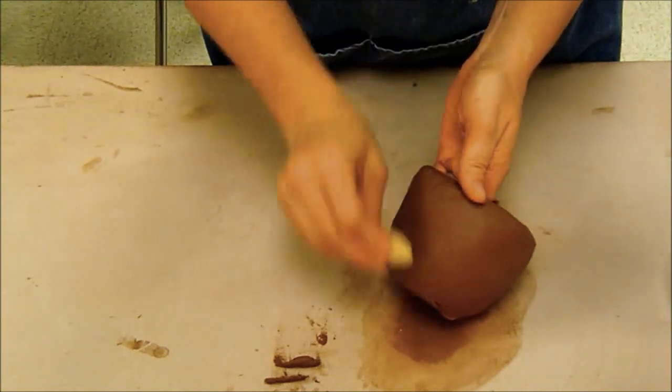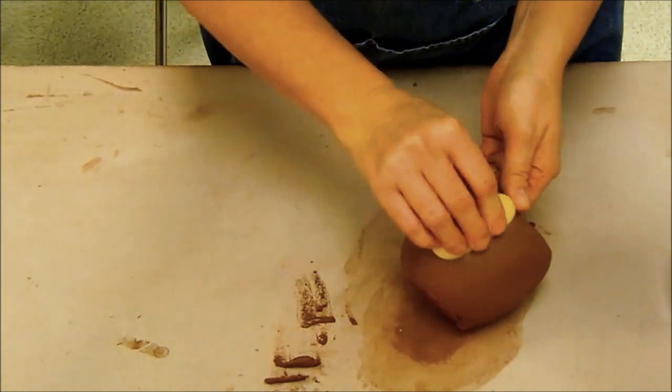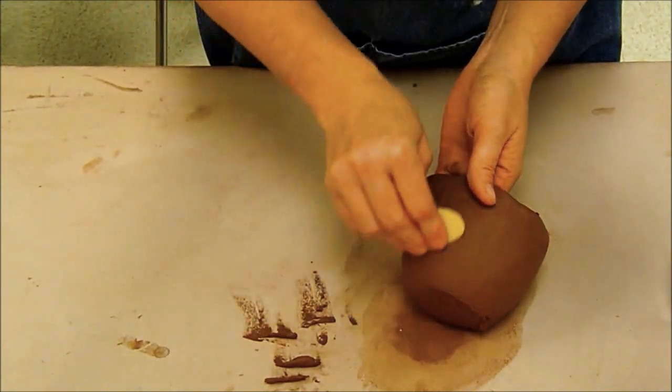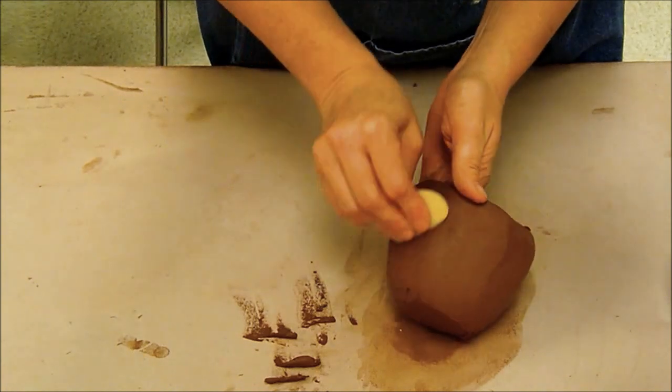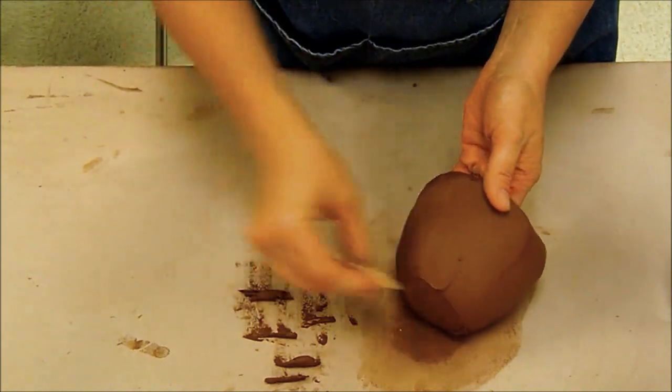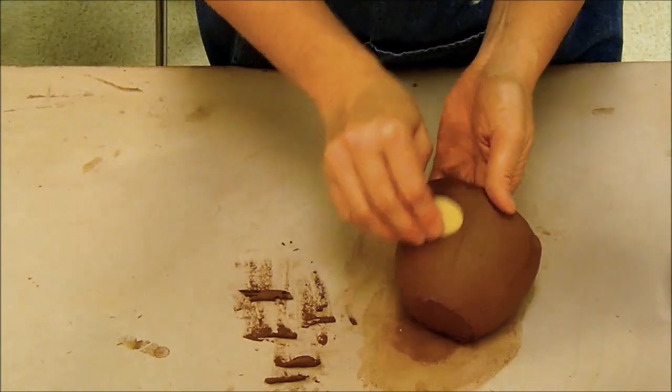Now you can see it is definitely getting rid of some of the lumps and the bumps and you can also see that I'm cleaning off the clay as I rib because if I don't I'm just going to spread that clay back around on the sides.